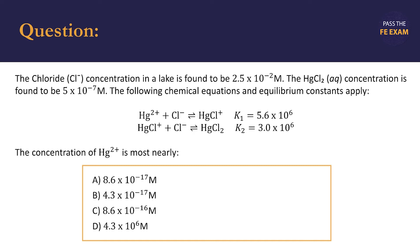With that said, we're provided with two chemical equations in this problem and their corresponding equilibrium constants, K1 and K2. Given all of this information, we're asked what the concentration of the mercury cation, Hg2+, is in M, which is the unit moles per liter.